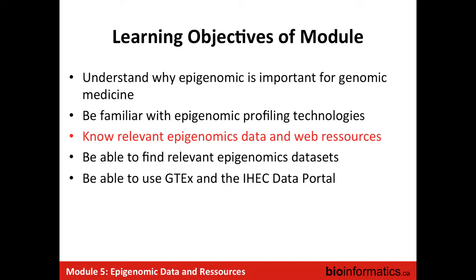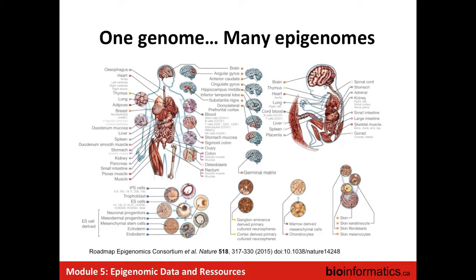So that was my intro and background as to why this is relevant. What are the resources now that are available to look at epigenetics data? One challenge in using epigenetics is that you only have one genome, but every cell type will have its own set of enhancers, its own set of genes that are expressed. Just like we needed a human reference genome for variant analysis, we need a human epigenome reference to know the normal state of all these tissues.